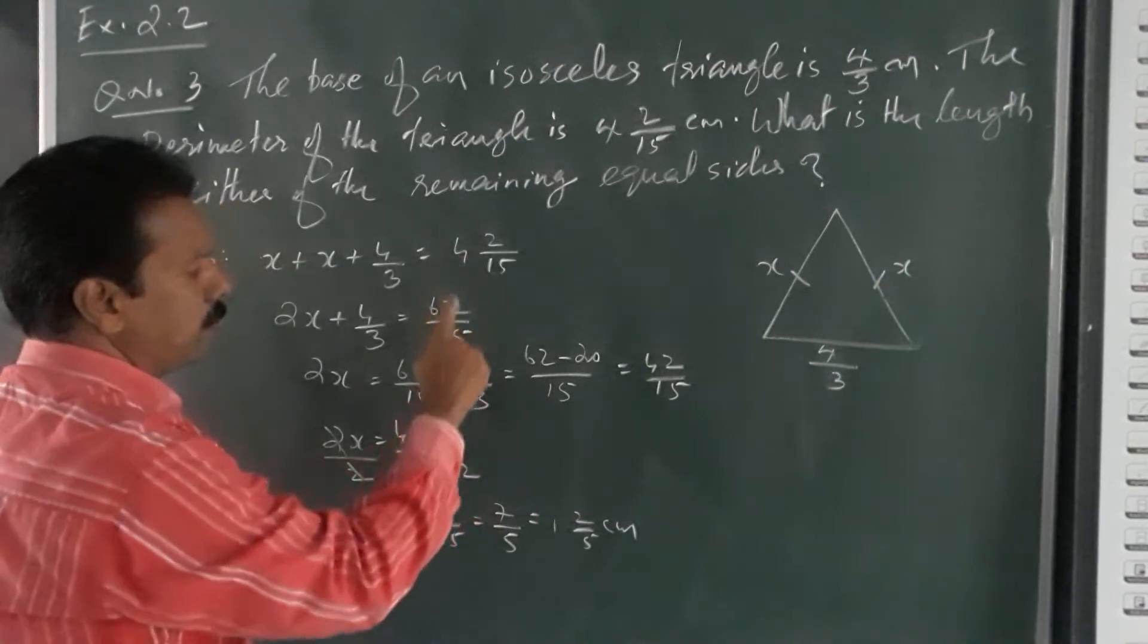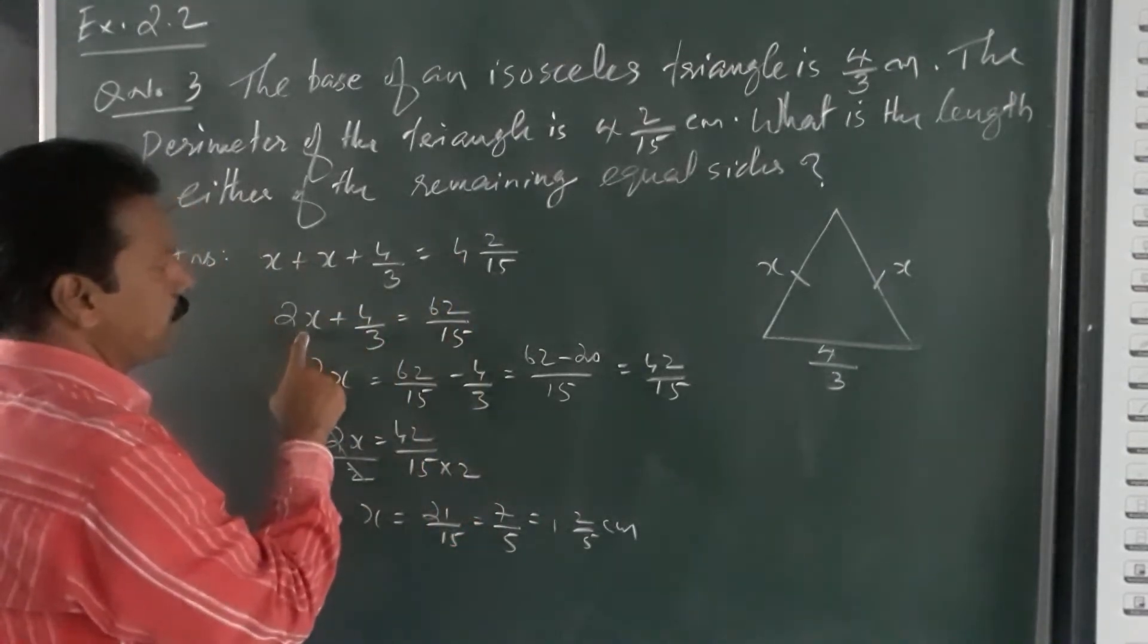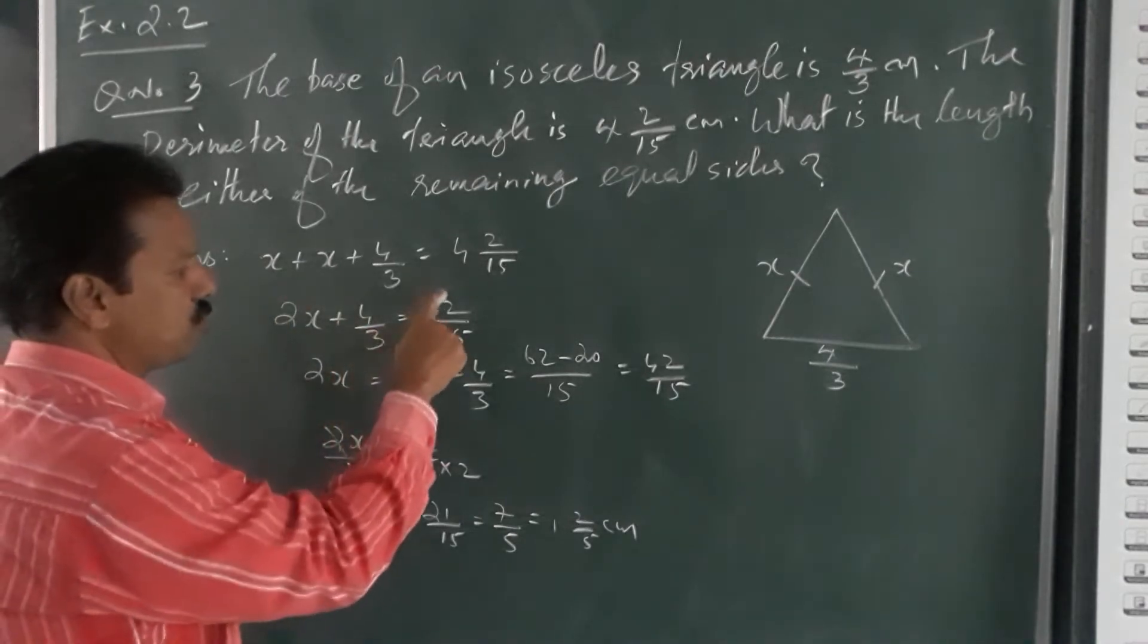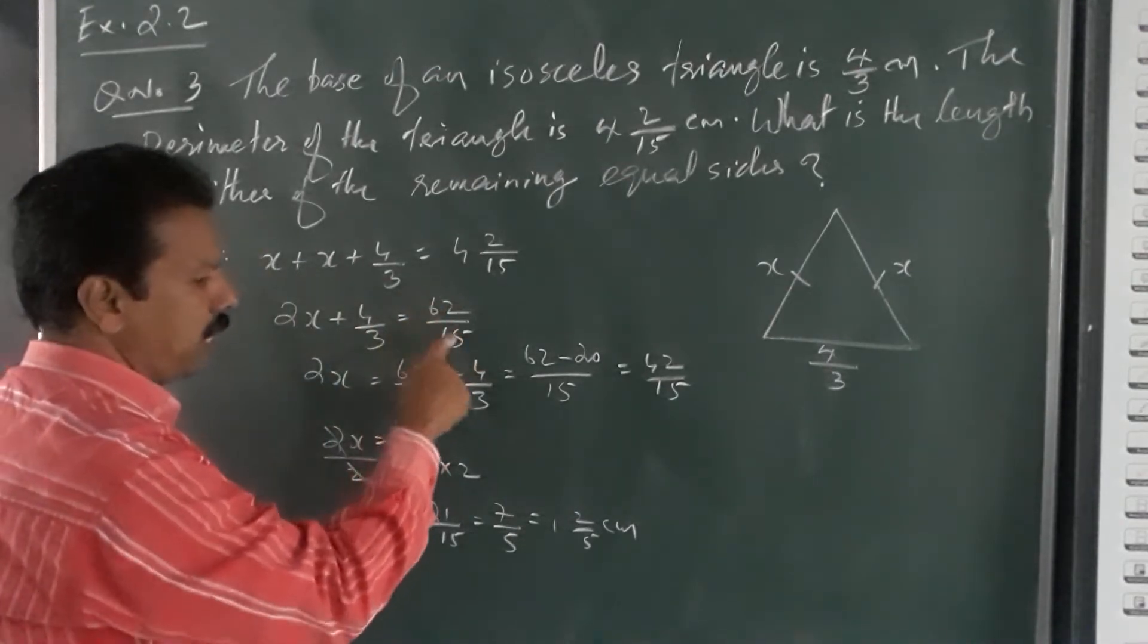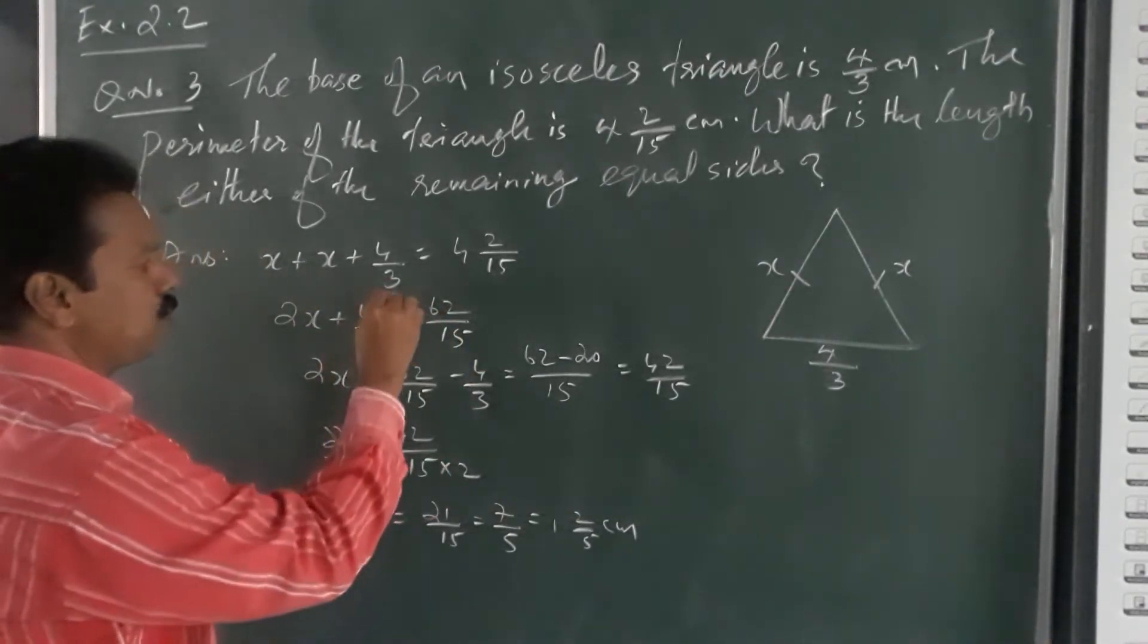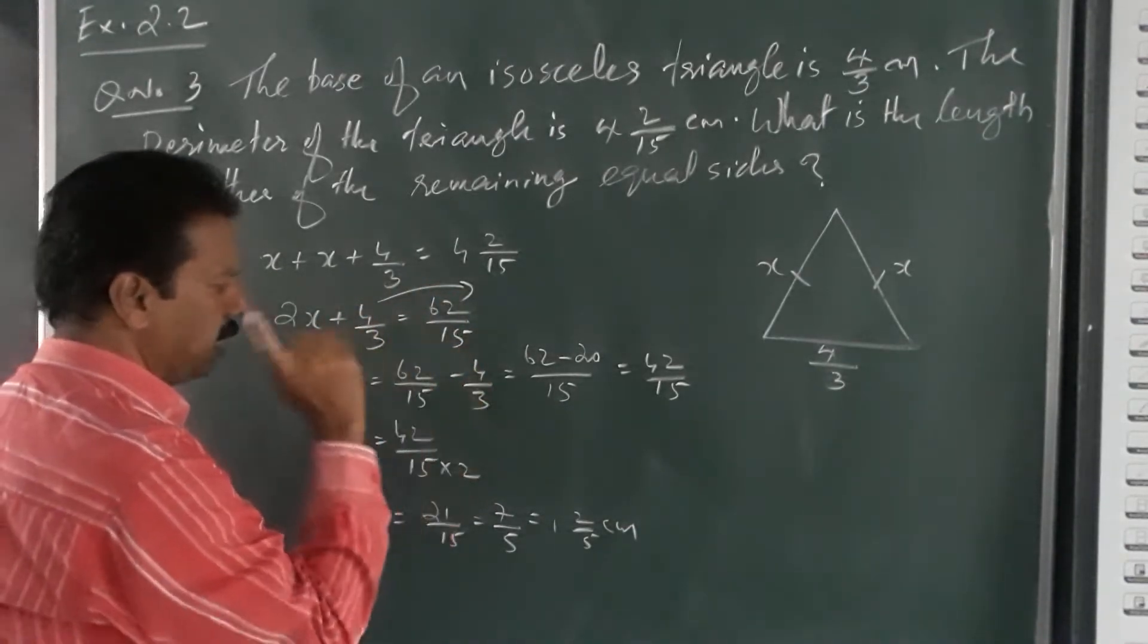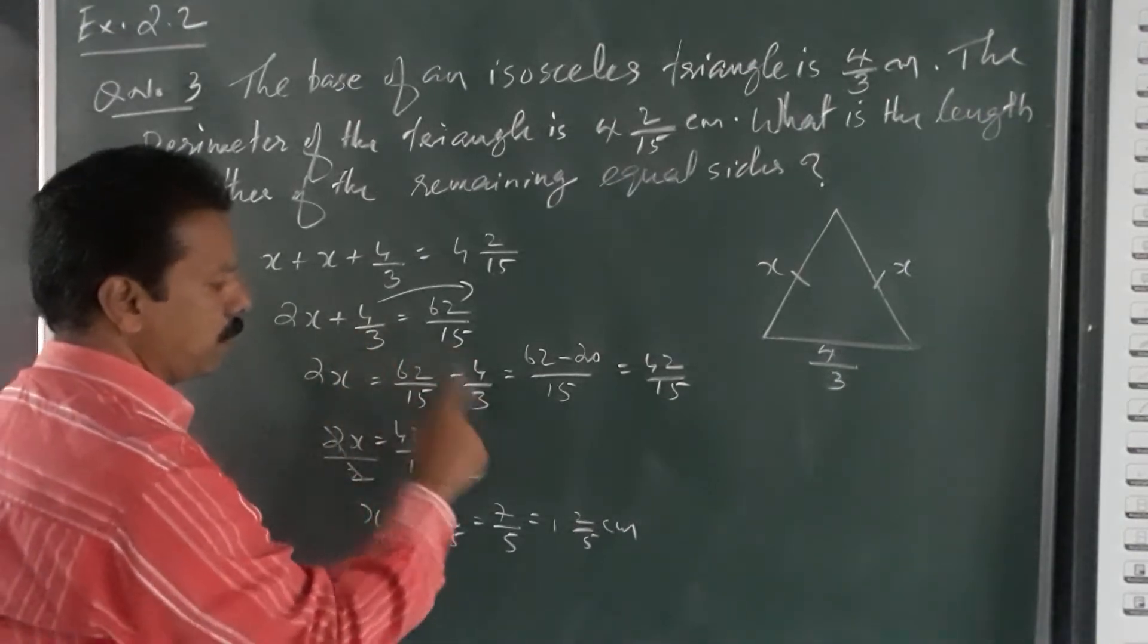2x plus 4 by 3 is equal to 62 by 15. Transpose this 4 by 3 to the other side, plus will become minus. 2x is equal to 62 by 15 minus 4 by 3.